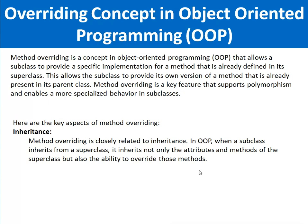When there is any method defined in the base class, it can be redefined in the subclass or child class. This allows the subclass to provide its own version of a method that is already present in its parent class. Method overriding is a key feature that supports polymorphism and enables more specialized behavior in subclasses.